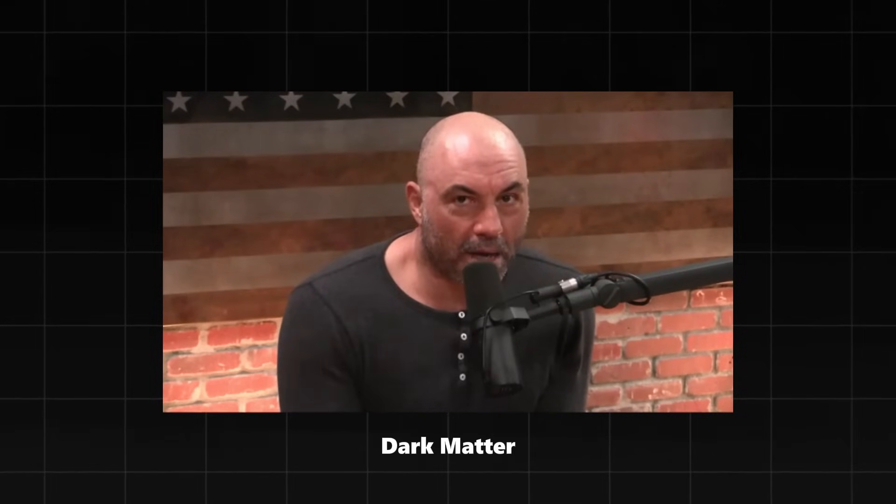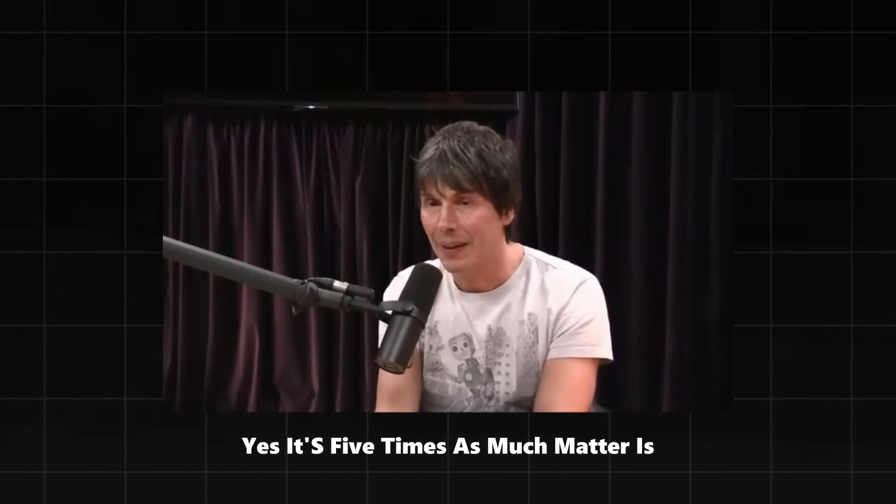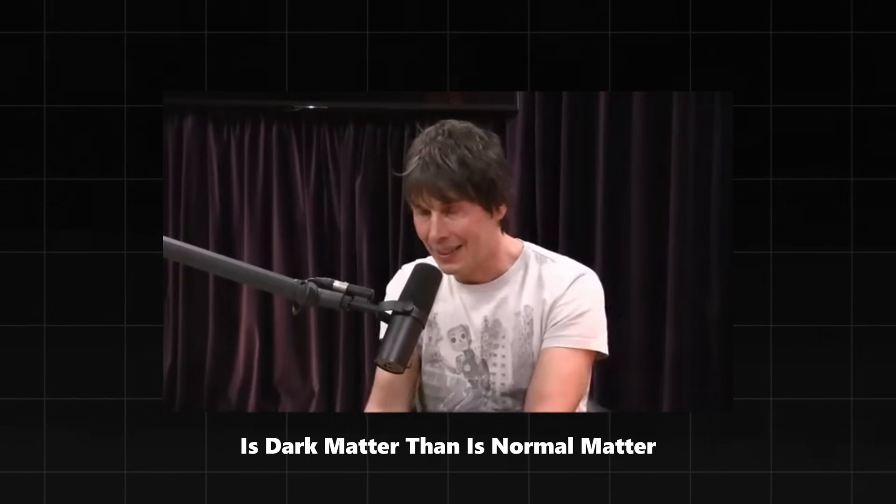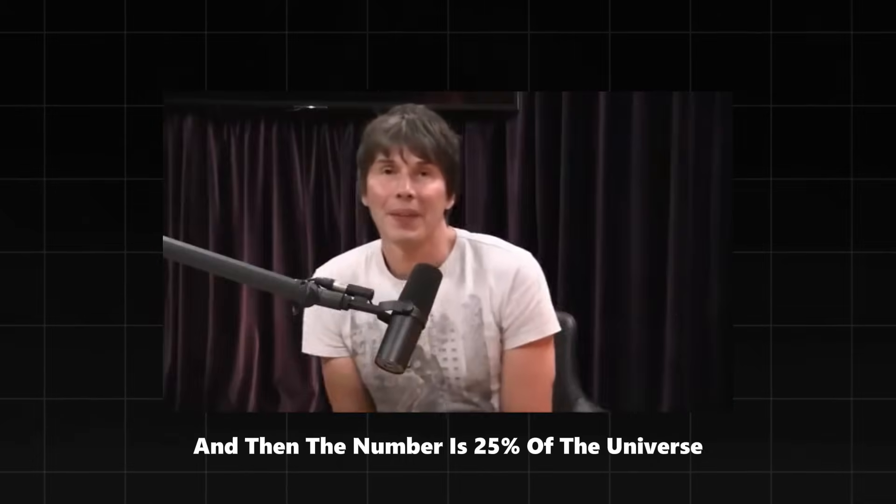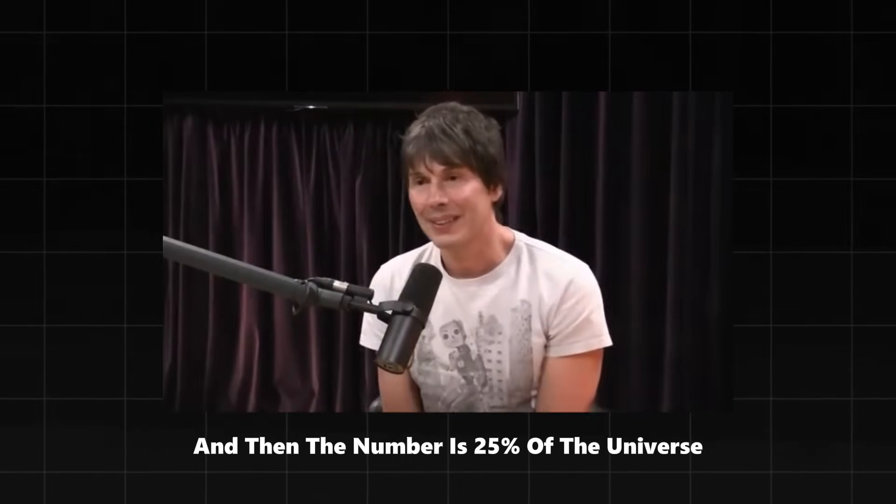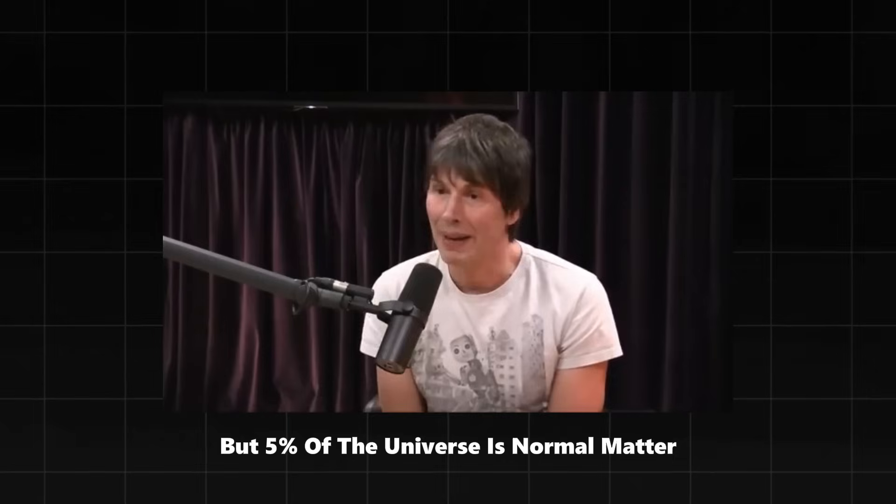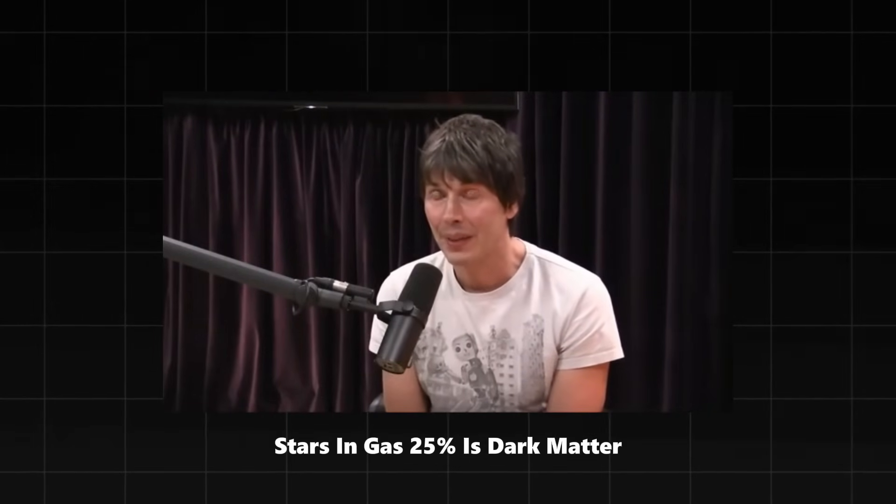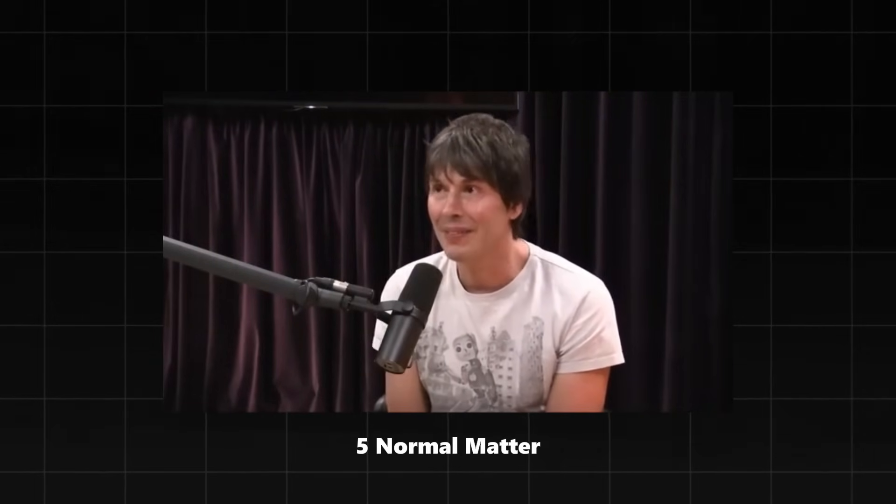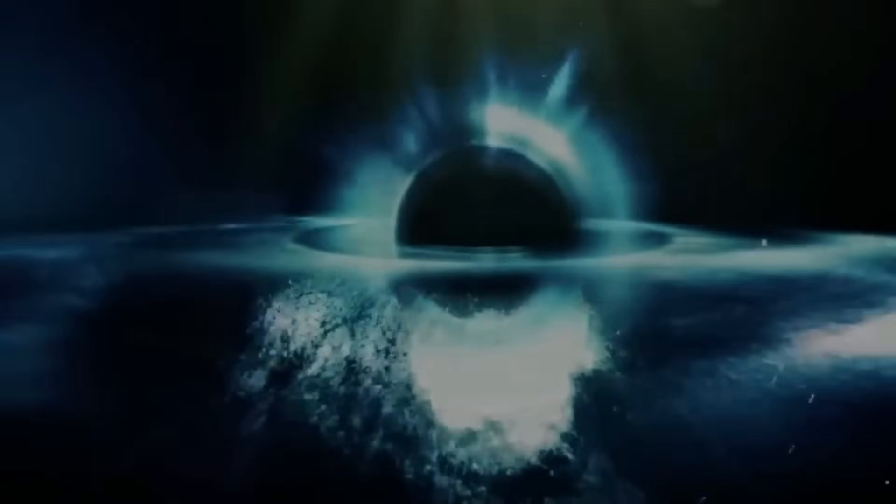The idea is that dark matter encompasses an enormous percentage of the universe. It's five times as much matter as dark matter than is normal matter. About 5% of the universe is normal matter, stars and gas. 25% is dark matter, and about 70% is dark energy.